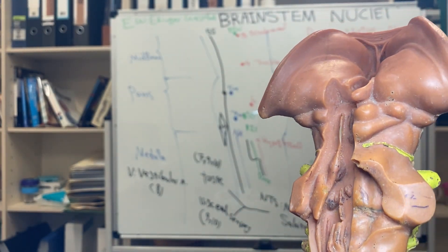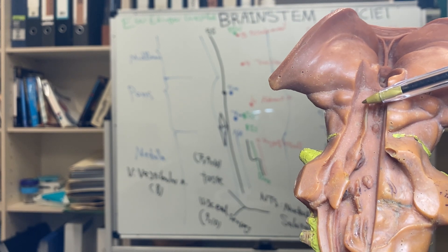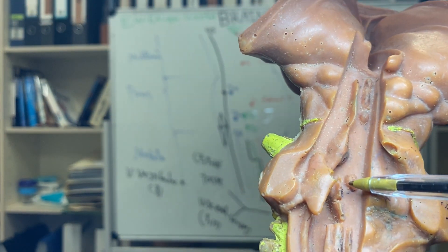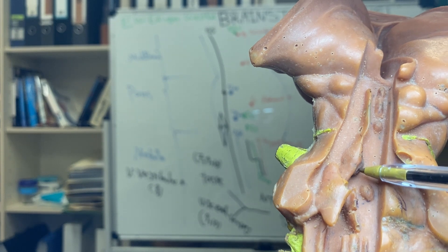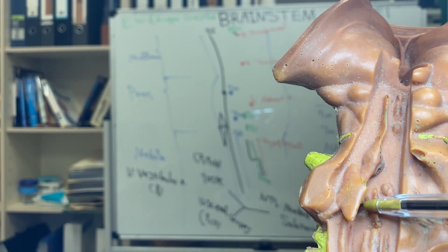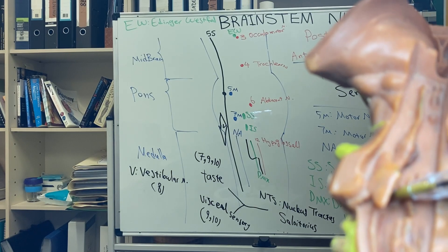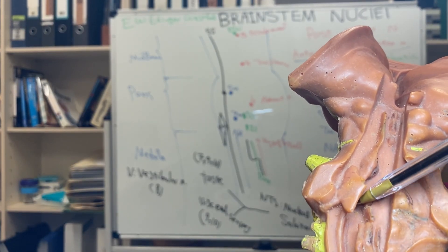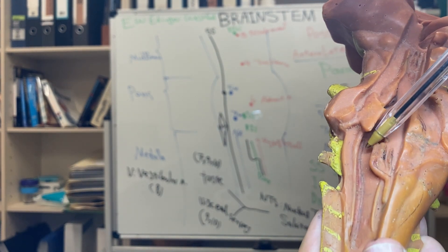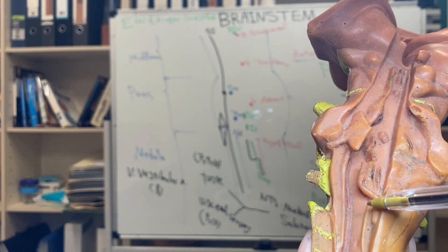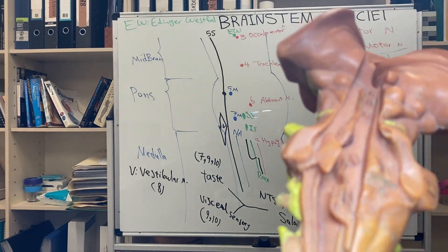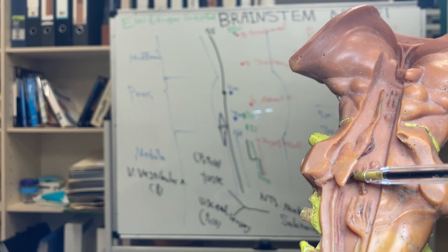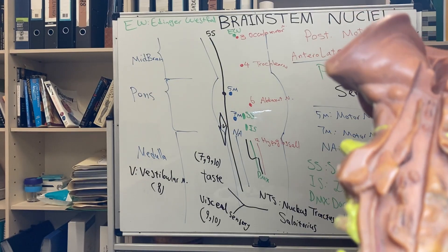Now I'm going to focus on the anterolateral nuclei. We don't have anterolateral nuclei in the midbrain, but in the pons we have two. A little bit lateral at the top we have five — the trigeminal motor nucleus. And down here, this bump is the facial nucleus — seven. At the same column, going down in the medulla, this long one is the nucleus ambiguous — related to 9, 10, and 11. So five, seven, and nucleus ambiguous are the anterolateral nuclei.